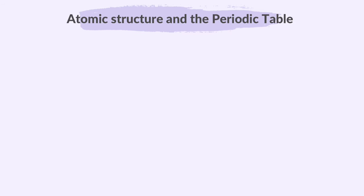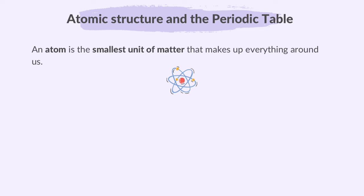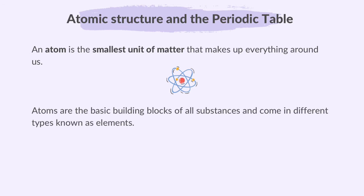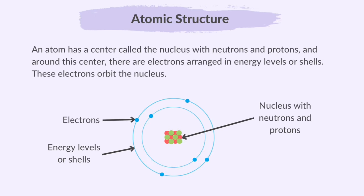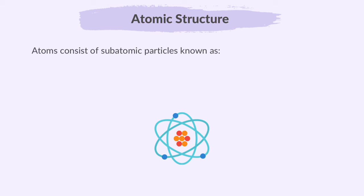Next, let's dive into atomic structure and the periodic table. An atom is the smallest unit of matter that makes up everything around us. Atoms are the basic building blocks of all substances and come in different types known as elements, such as carbon, hydrogen and oxygen. An atom has a centre called the nucleus with neutrons and protons, and around this centre there are electrons arranged in energy levels or shells. Atoms consist of subatomic particles known as protons, neutrons and electrons.